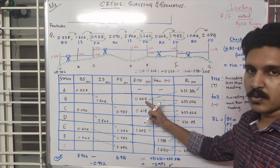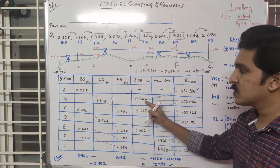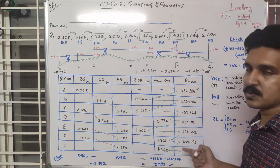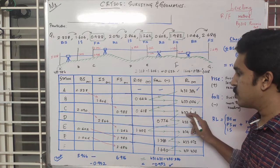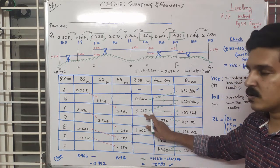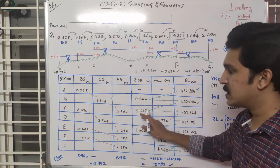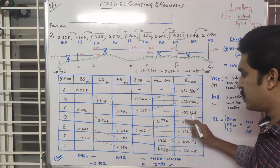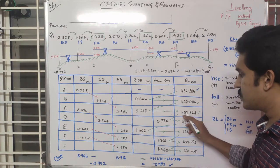Rise is followed: add 432.34 plus 0.622 equals 433.006. Rise is again followed: add 433.063 plus 0.618 equals 433.624. Then adding further gives 433.624.